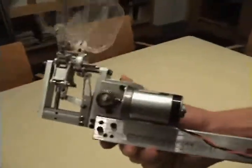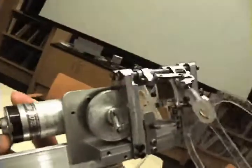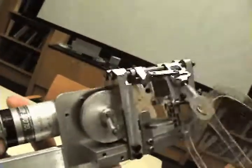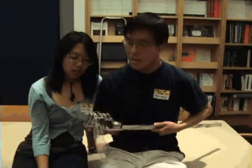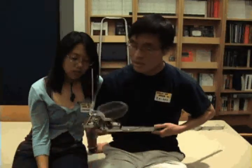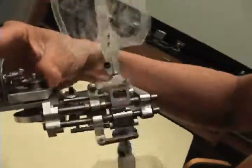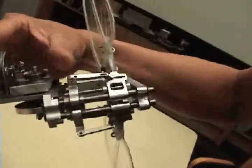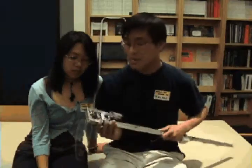You have a motor here that basically turns a simple crank mechanism to flap the wings up and down. Now, there's also a secondary mechanism here that tilts the wing at the right angle as it flaps. And we can adjust this to flap more like a dragonfly or a hummingbird.